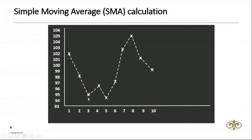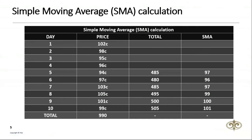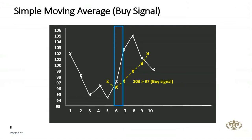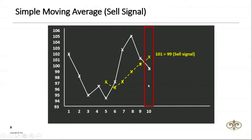On a simple chart with 10 days plotted, you can see we had a downtrend, a one-day bounce, and then down again, followed by an uptrend and then a downtrend. Plotting the five-day moving average, signals come in when the share price crosses above the moving average — in this scenario the share price is 103 and the moving average is 97, generating a buy signal. Conversely, when the price comes down through it and the share price is below the moving average — 99 versus 101 — that would be the sell signal.